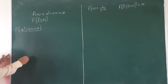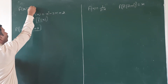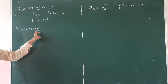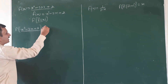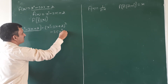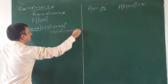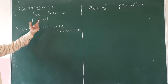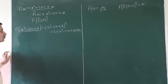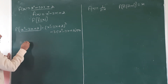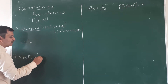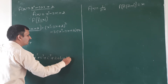जैसे f(2) निकालना होता तो x की जगह 2 रखते: 2²-3×2+2। अब f(f(x)) में x की जगह (x²-3x+2) रखेंगे। तो f(f(x)) = (x²-3x+2)²-3(x²-3x+2)+2। इसको expand करने के लिए (a+b+c)² का formula लगाएंगे: a²+b²+c²+2ab+2bc+2ca। यहाँ a = x², b = -3x, c = 2।